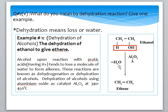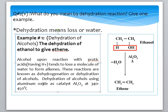Alcohol reacts with a protic acid in an acidic solution. The reaction causes the molecule to lose a water molecule to form an alkene. This is known as dehydration or dehydrogenation of alcohol. Aluminium oxide, Al2O3, is used as a catalyst at a temperature of 340 to 450 degrees Celsius.